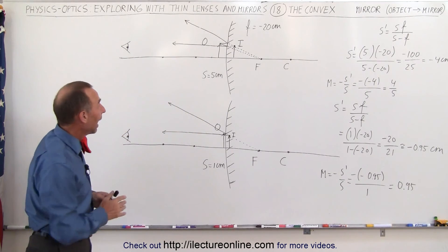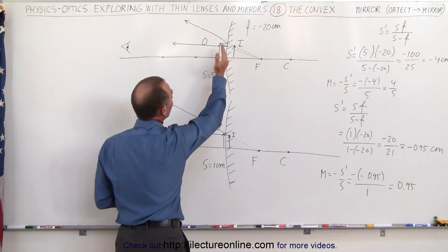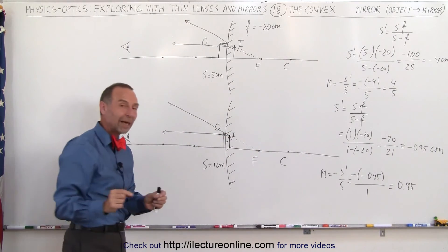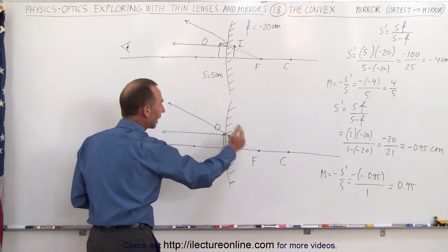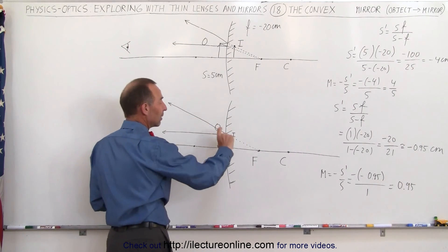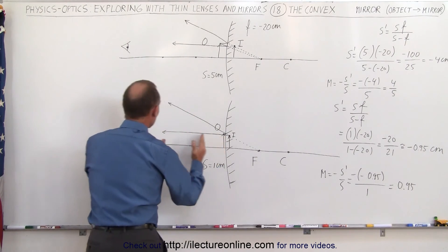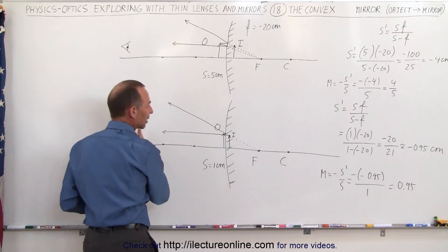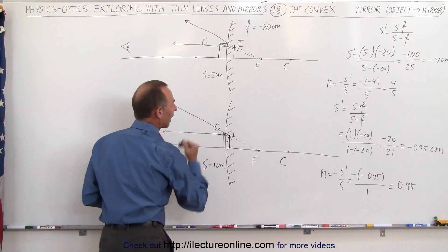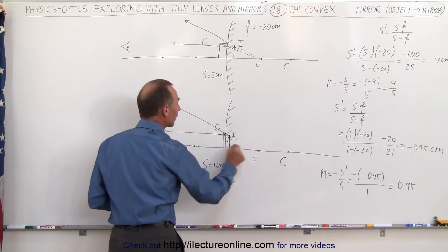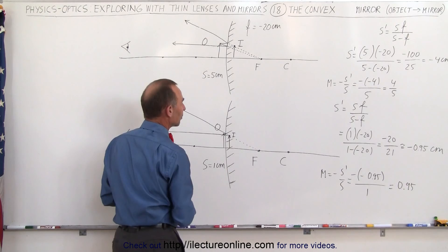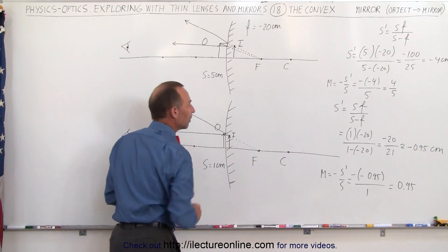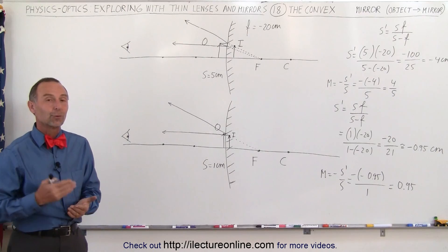We can see that in the limit, as the object keeps moving closer and closer to the mirror, the image keeps coming closer to the mirror from behind. At any distance, it doesn't matter where you place the object — the image will always be behind the mirror with a convex mirror, and therefore the image will always be virtual. As the object moves farther away to infinity, the image tends to form at the focal point. As the object gets close to the mirror itself, the image forms right behind the mirror as well. So the image will form somewhere between the mirror and the focal point, regardless of where the object is. Now we understand how images are formed with convex mirrors.